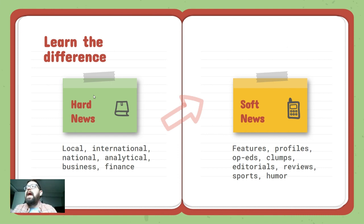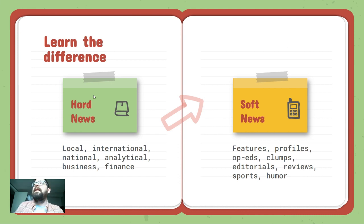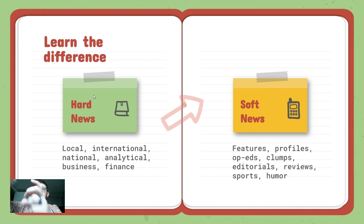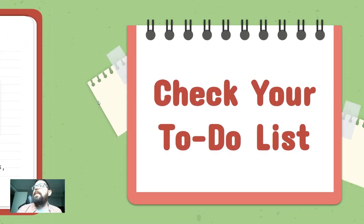What is hard news versus soft news? They've merged along the way but we still have two fairly separate entities. Hard news includes local, national, international, analytical, business, and finance news — your hard facts, numbers, and weighty important things. Soft news includes features, reviews, sports, humor, opinions, editorials, profiles, and little snippets that wind up in random places.